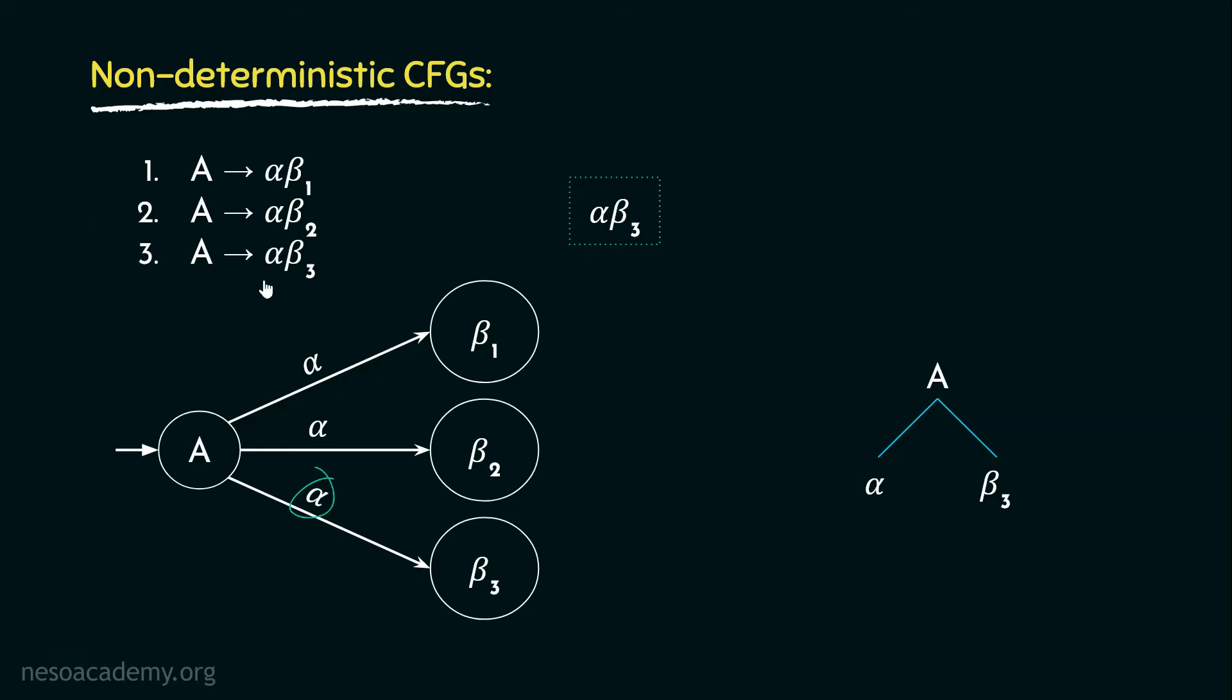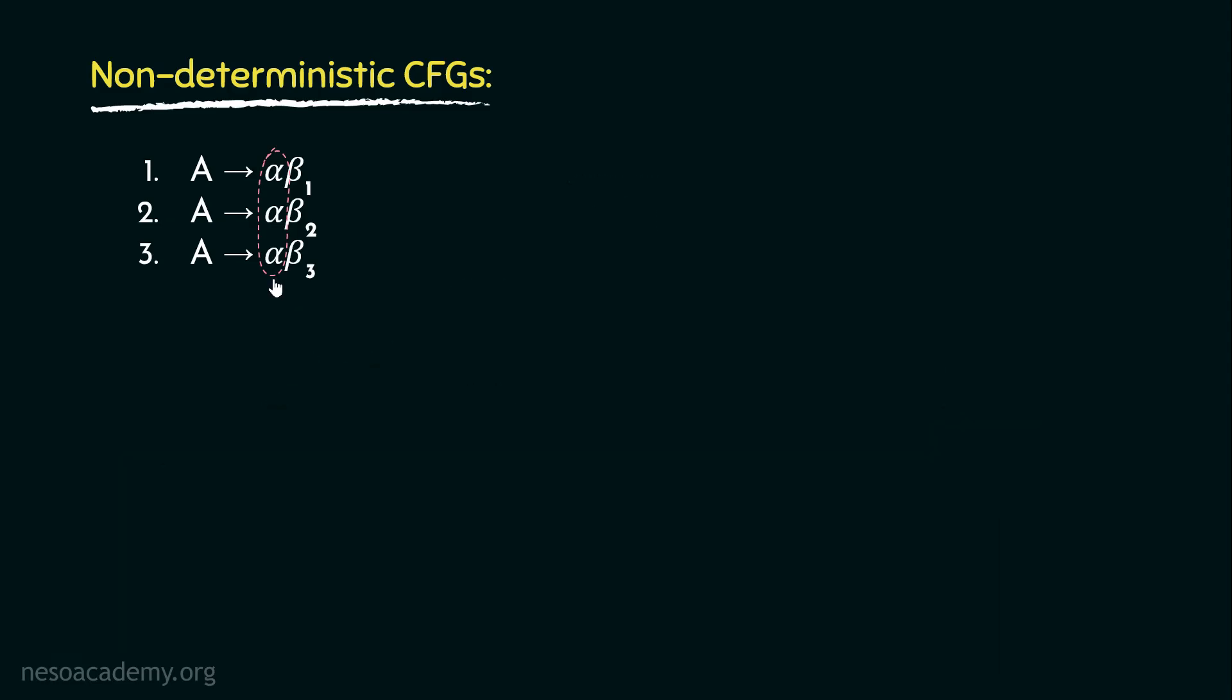Observe all the productions have the same prefix. This is the concept behind non-determinism, and due to this common prefix problem, top-down parsers have to withstand an awful lot of backtracking.